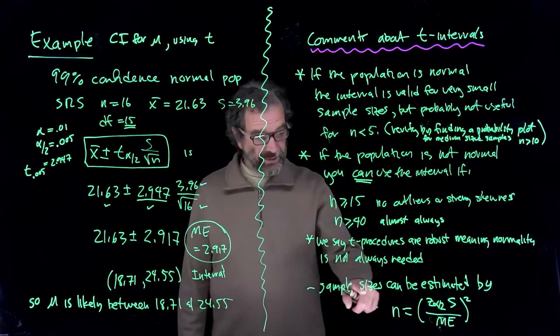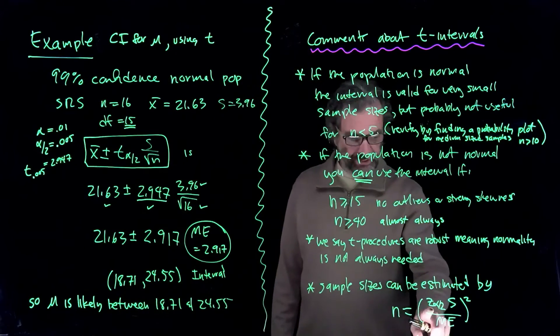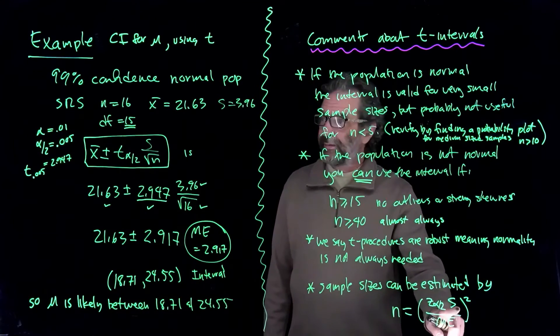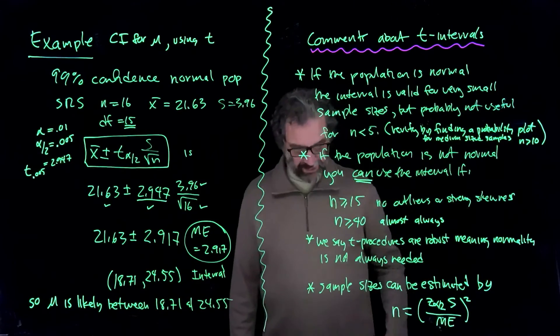And then here's the sample size calculation. It can be estimated by this quantity. So you take your critical z value, you take the sample standard deviation, divide by the margin of error, and you square that, and that gives you the sample size.